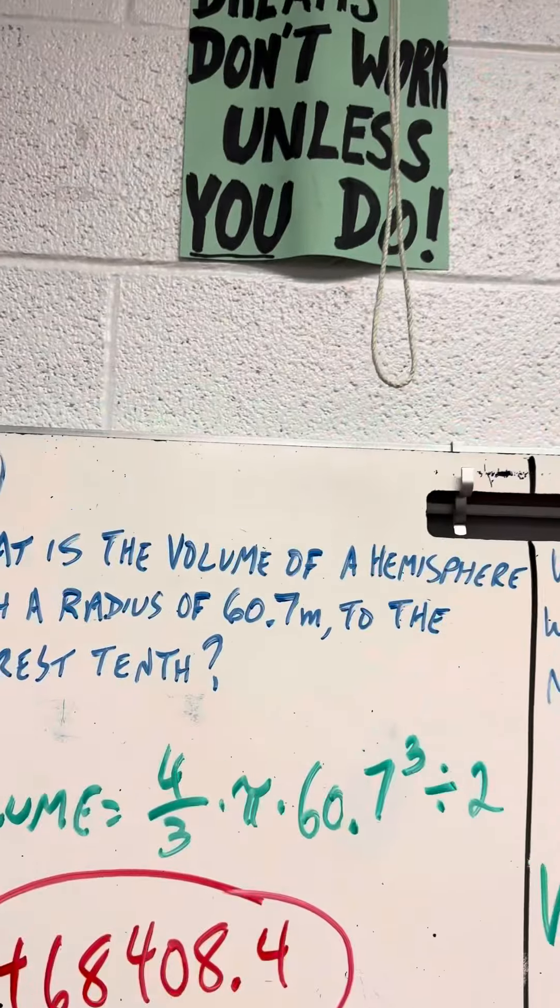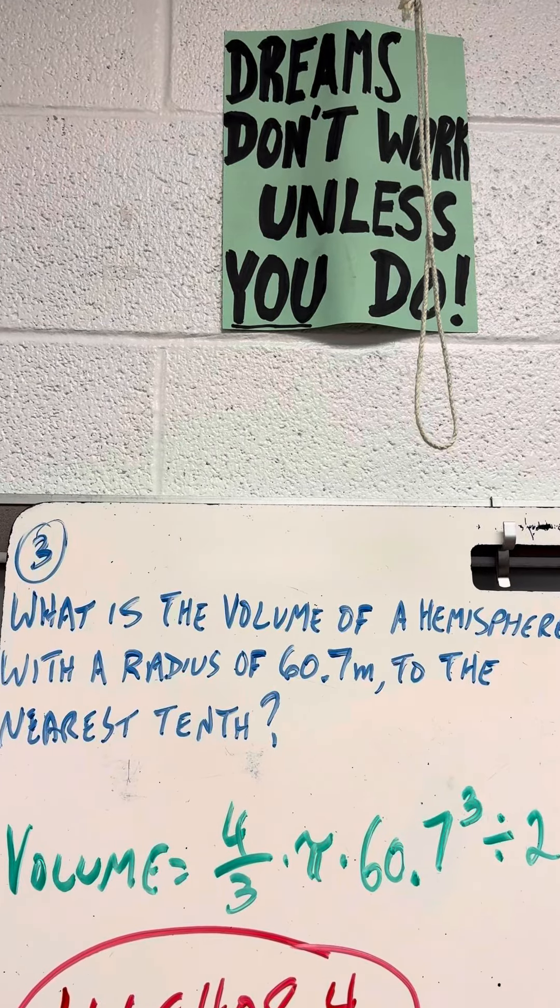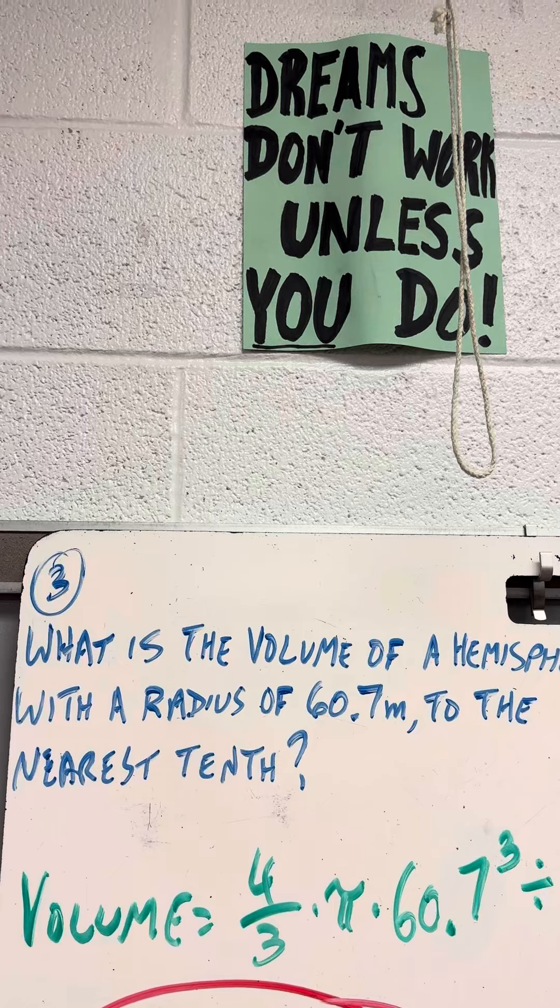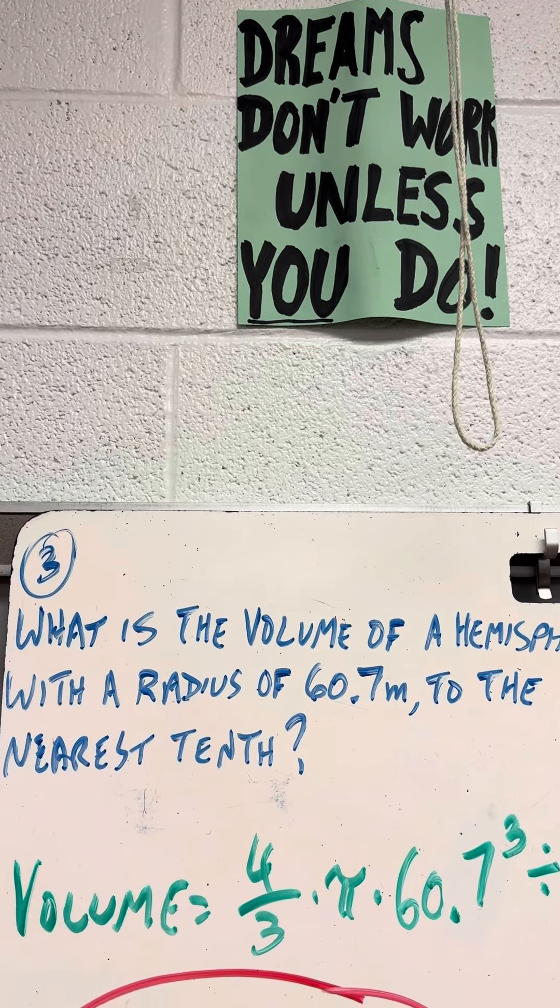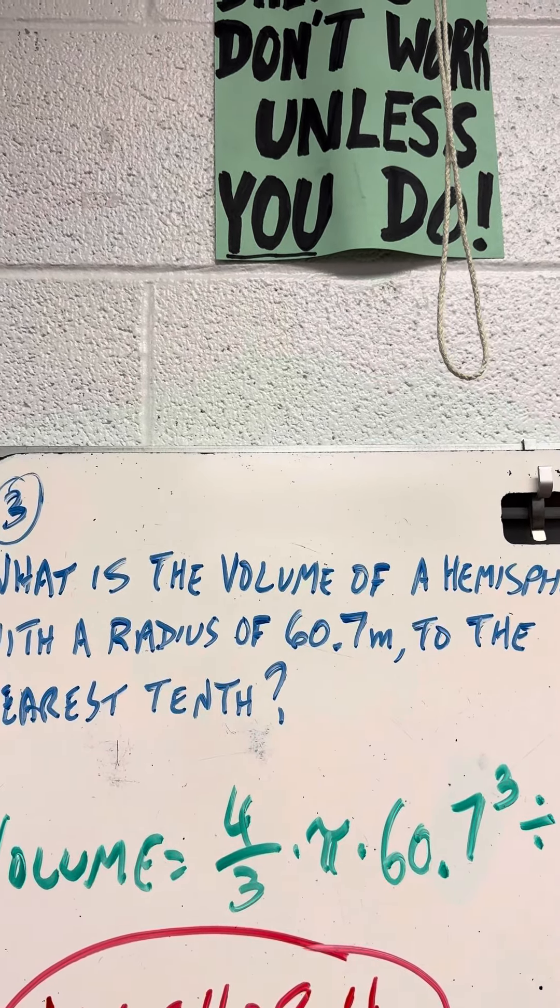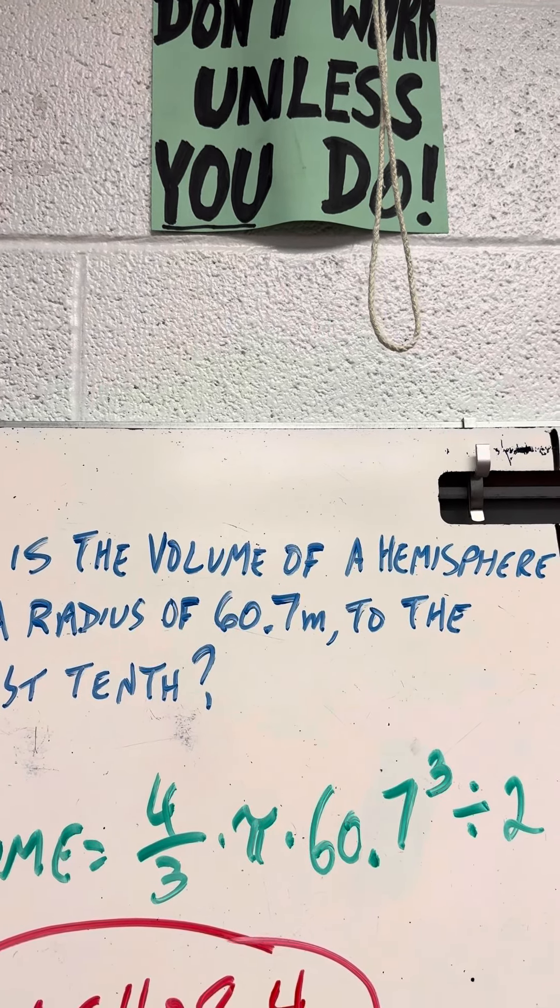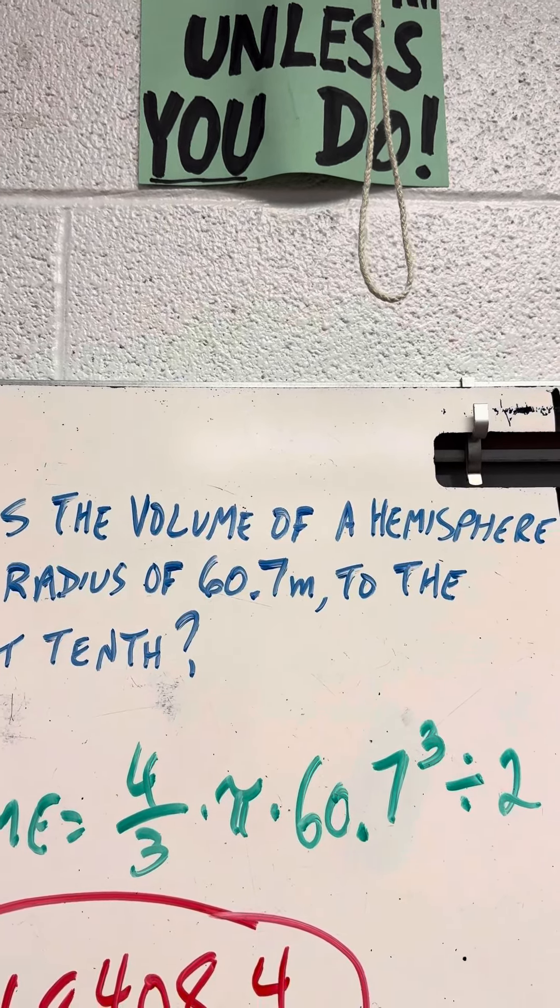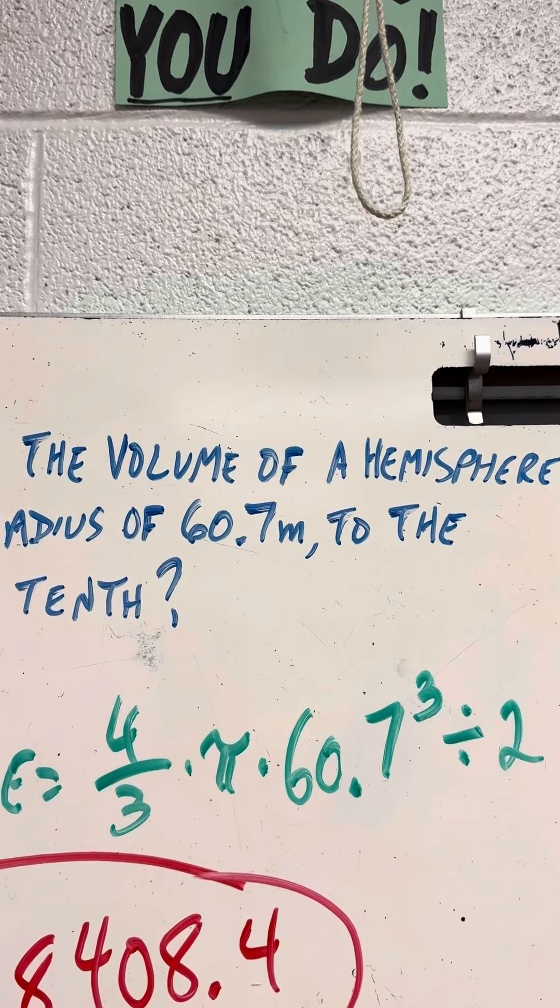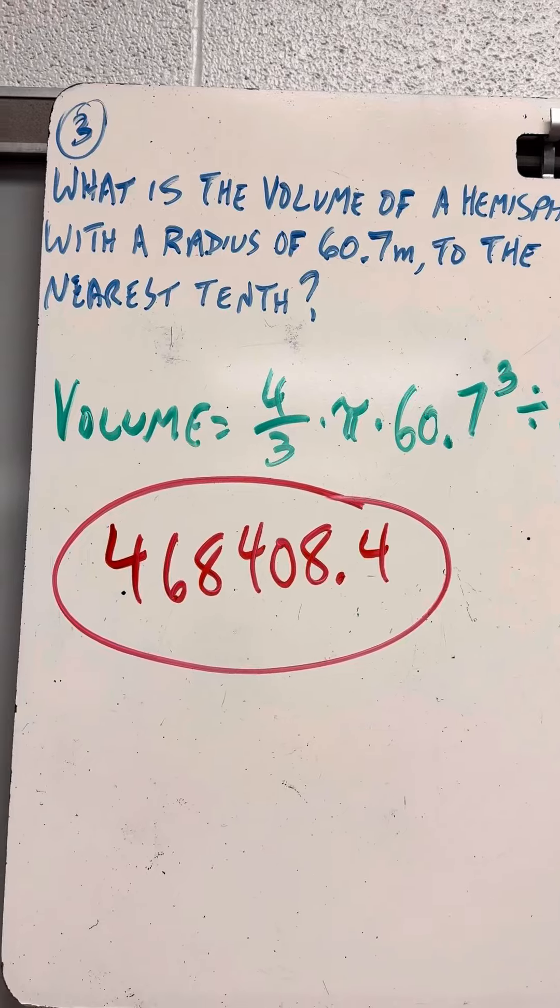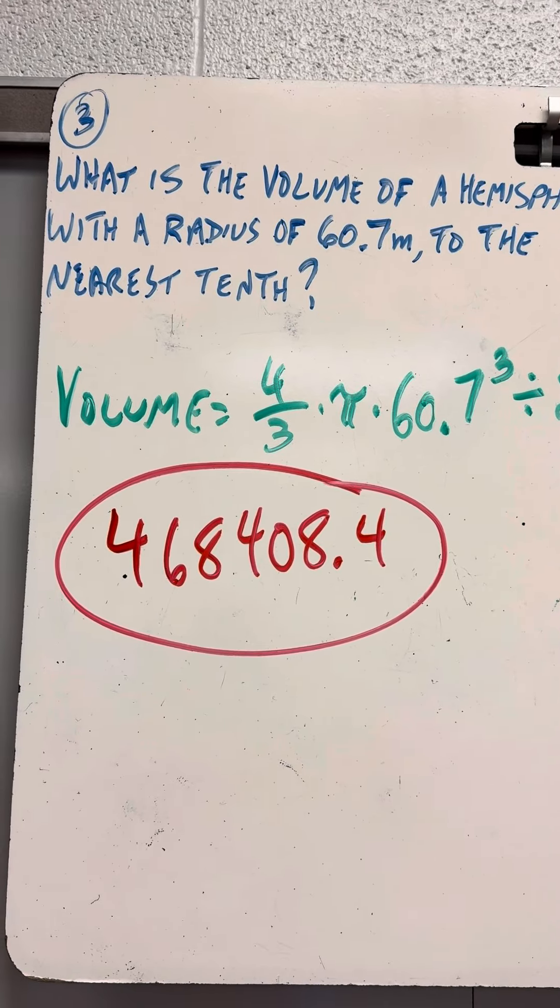What's the volume of a hemisphere? Hemisphere is half a sphere with a radius of 60.7. So 4 divided by 3 times pi times 60.7 x to the third key. Then, because it's a hemisphere, you've got to type divided by 2 and hit equals 468,408.4.